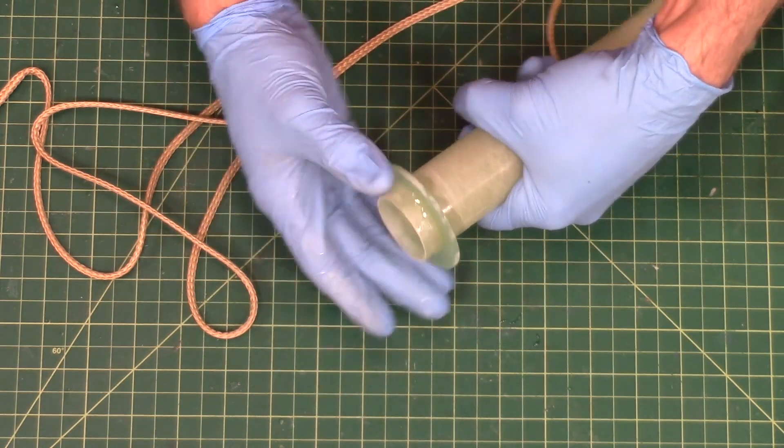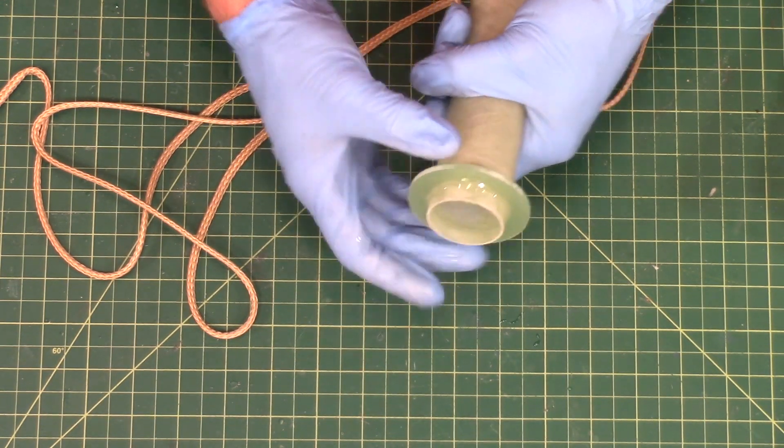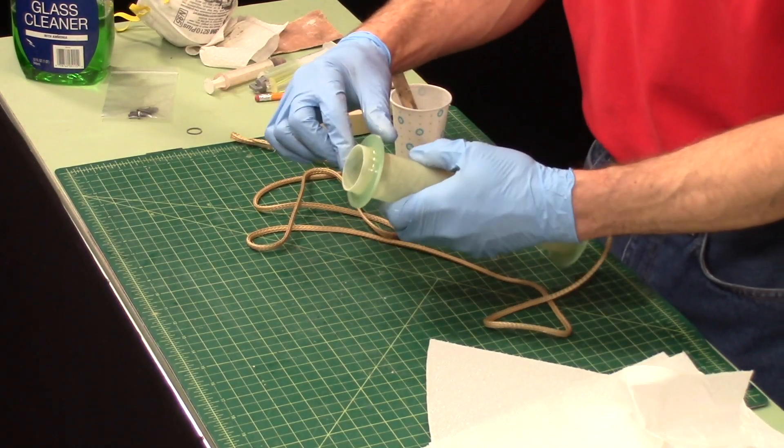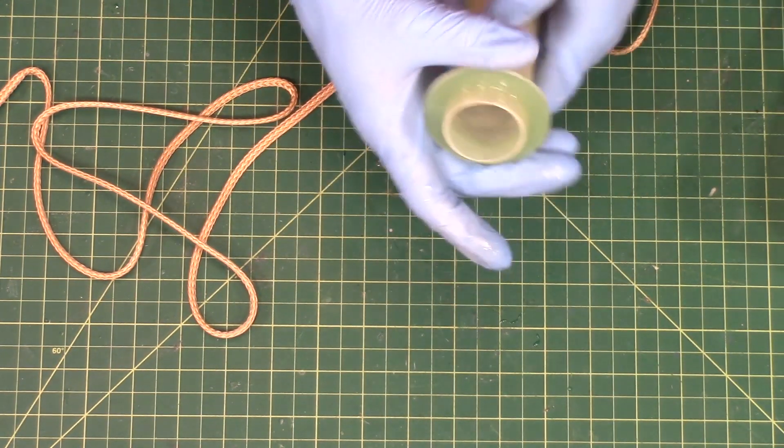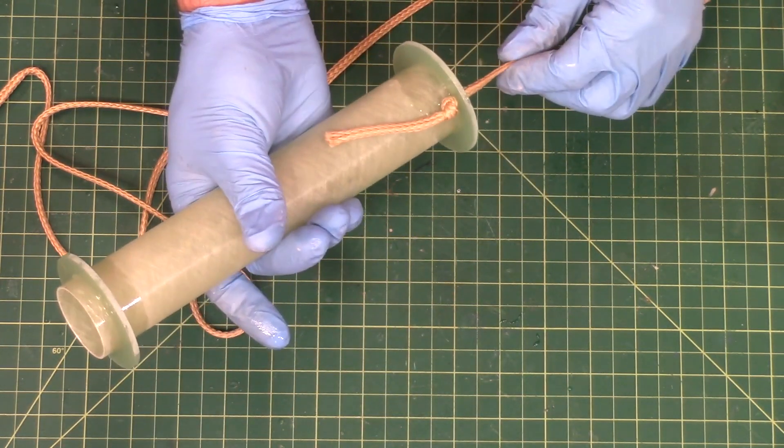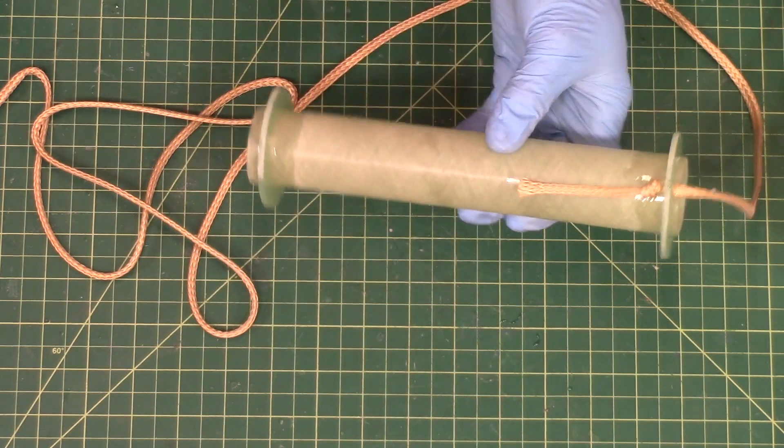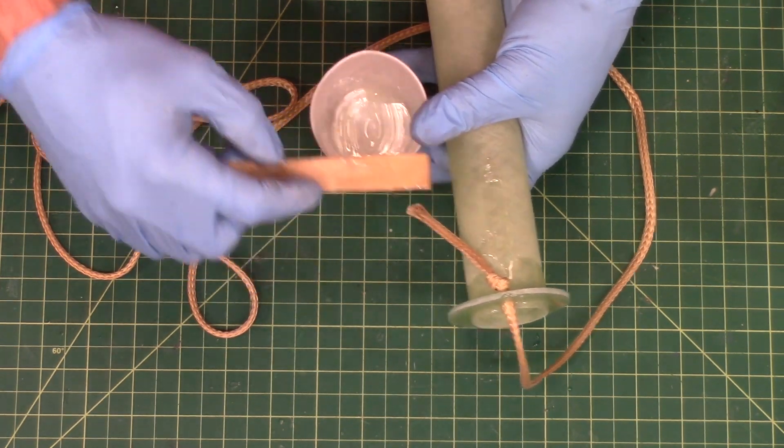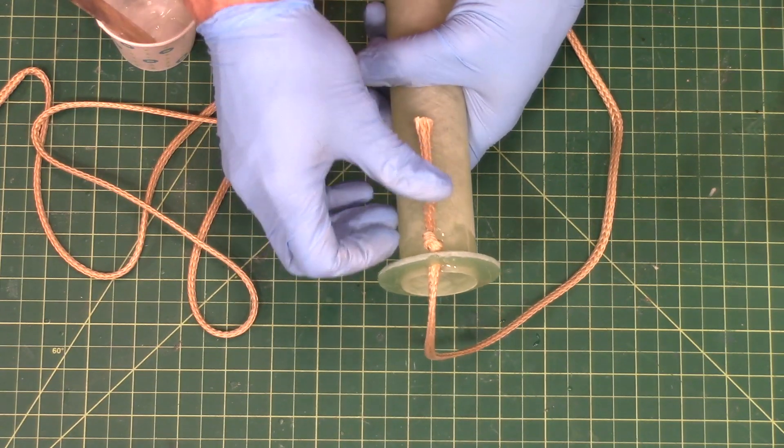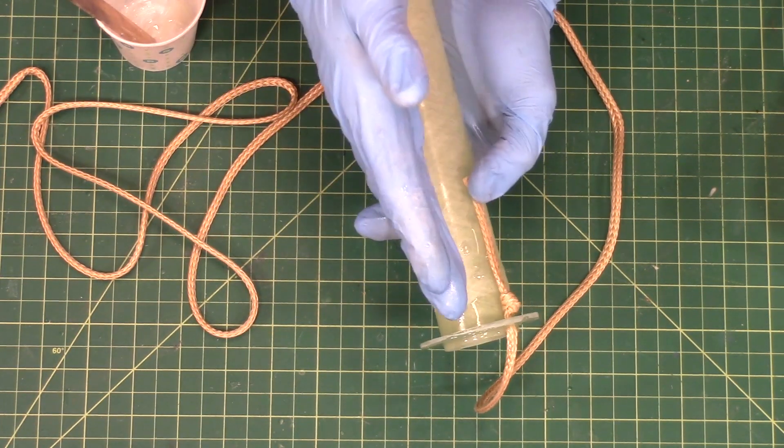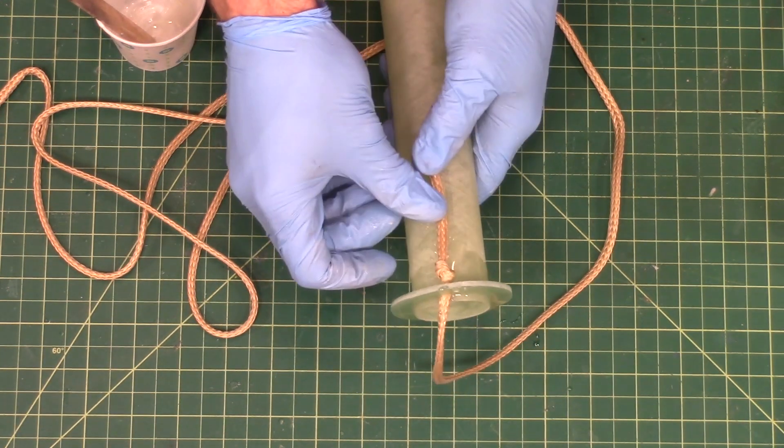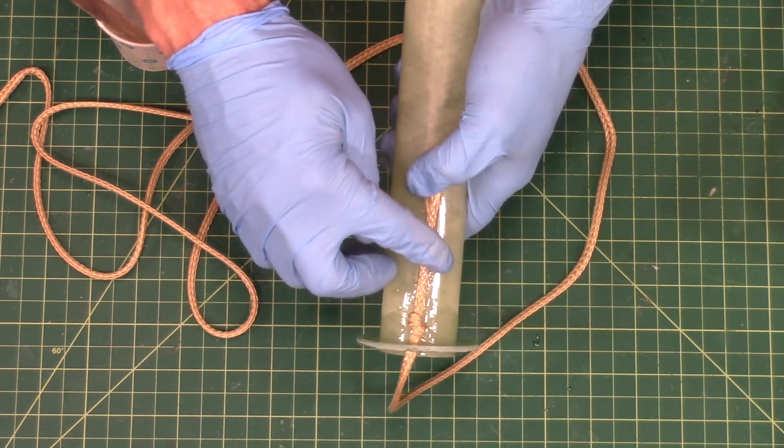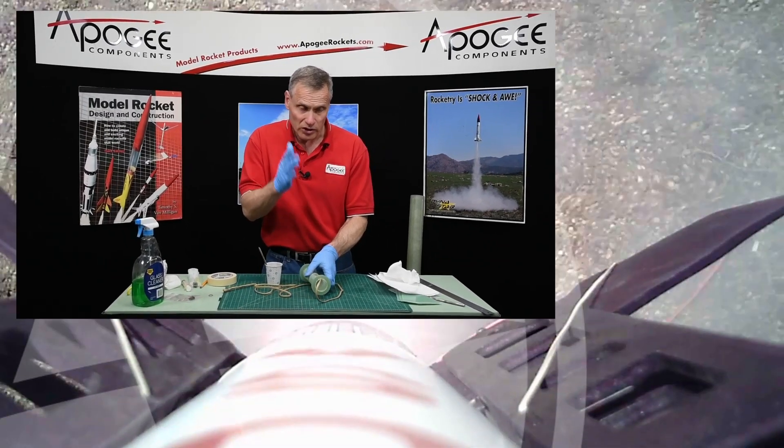We do want to make sure that they're not crooked in any way. If you want you can epoxy the shock cord down to the tube just to keep it from getting in the way. We don't want it to get in the way of our fins because our fin tabs are going to come down to the tube, and if this curls off to the side it could make it hard to position things. So if it's nice and straight it's a little bit easier to get those fin tabs in.